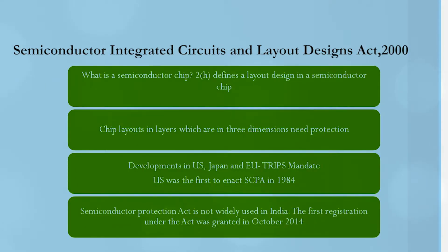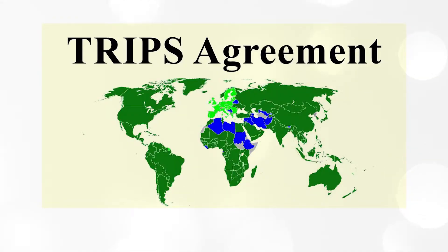But in India, semiconductor chip protection is widely unused. The first registration under this act was done only in October 2014. This means there is no semiconductor chip industry in India that needs such protection, and yet we have it in the form of domestic law. One of the reasons we have it as domestic law is because there is a clear mandate in the TRIPS agreement which requires all WTO members to have such a form of legislation.